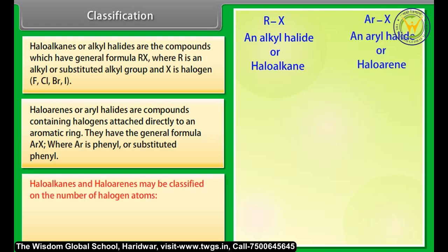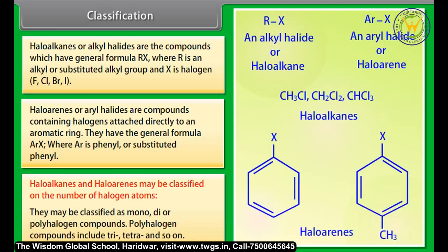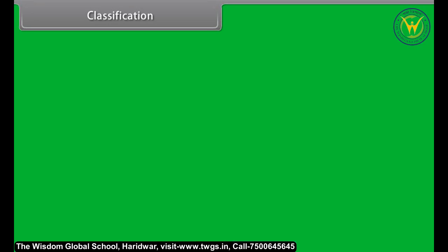Haloalkanes and haloarenes may be classified based on the number of halogen atoms. They may be classified as mono, di, or poly halogen compounds. Poly halogen compounds include tri, tetra, and so on.